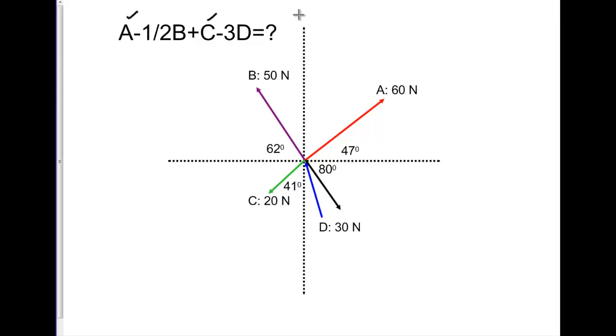I'll proportionately make it like that. So now this vector is going to have a magnitude of 25 newtons because it's one-half of B.